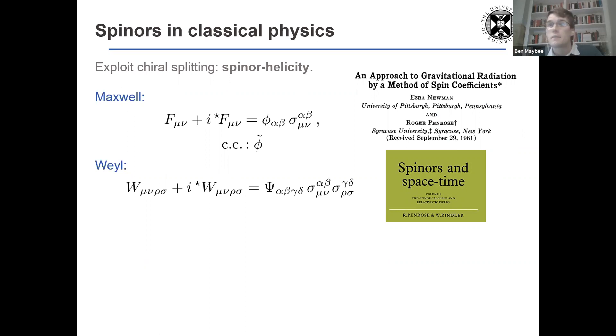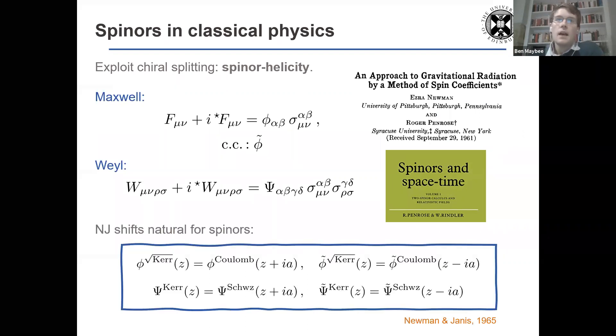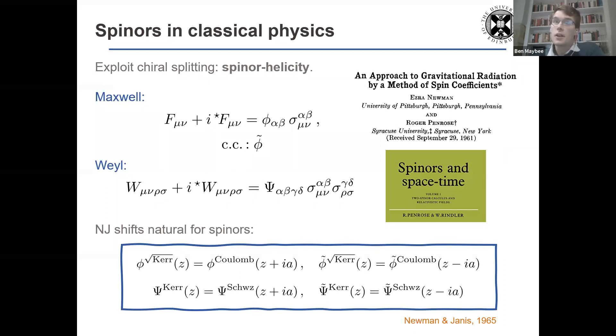In gravity, it's the Weyl spinor, which obviously didn't appear in the action. There's a natural object to use in this context. And these are also the natural objects where Newman-Janis shifts occur. So for root Kerr, the shift very naturally occurs as a plus iA and minus iA on the Maxwell spinor. And for Kerr, it's a plus iA and minus iA shift on the Weyl spinor and its conjugate.